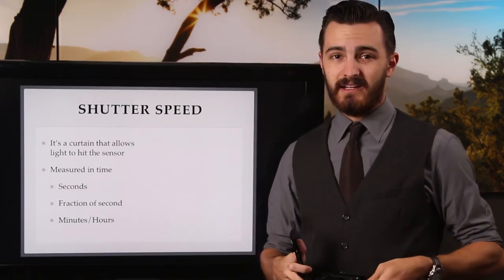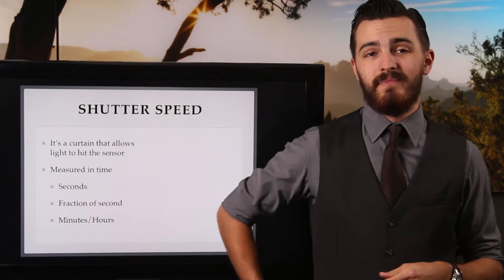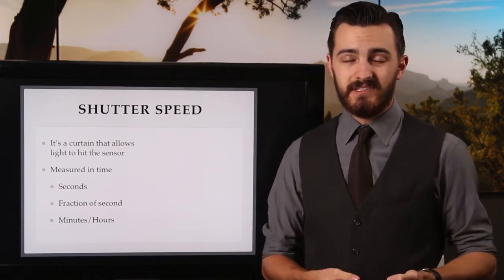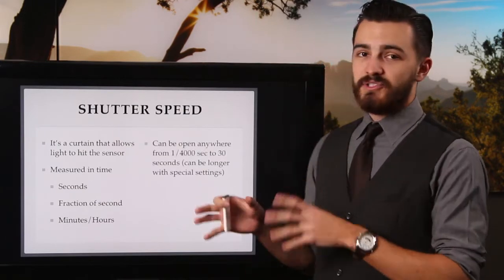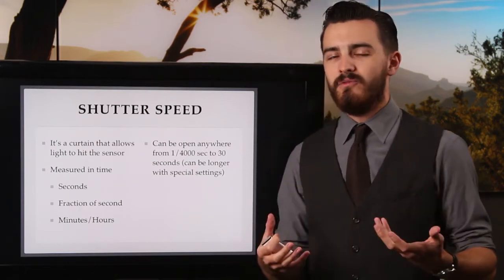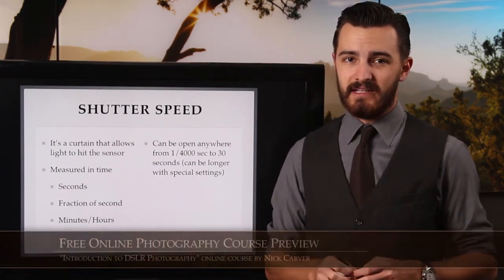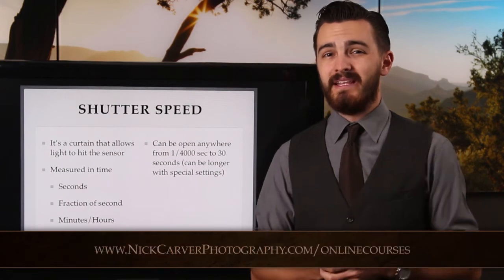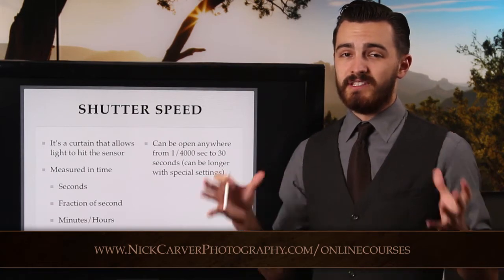In daily life we think of one second as being pretty fast, but in photography that's an eternity. The vast majority of your photos will be in fractions of a second, like hundreds or thousands, unless you're on a tripod, in which case you can get into multiple seconds. Most cameras can be open anywhere from one four-thousandth of a second to thirty seconds, and longer with special settings in full manual. One four-thousandth of a second to thirty seconds is more than sufficient for what you'll have to do.